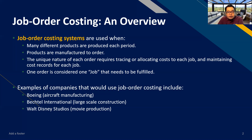Number two, products are manufactured to order. Similar to furniture, each order is different, and therefore there are differing levels of materials, labor, and overhead for each kind of order or job. The unique nature of each order requires tracing or allocation of costs to each job. Job order costing deals with the tracing and allocation of costs to different jobs, so that we can know the proper cost of one product and price them appropriately.